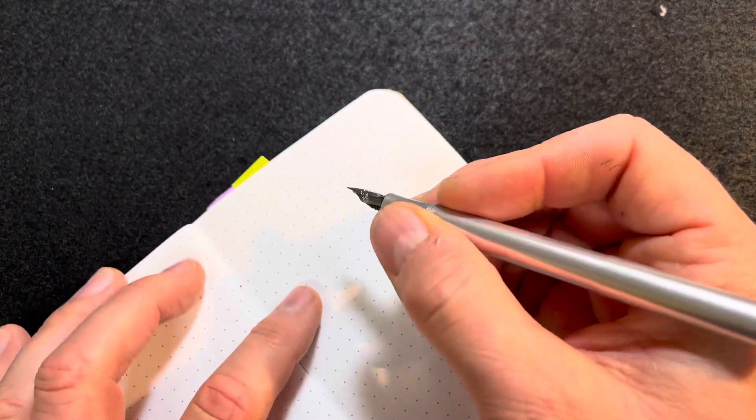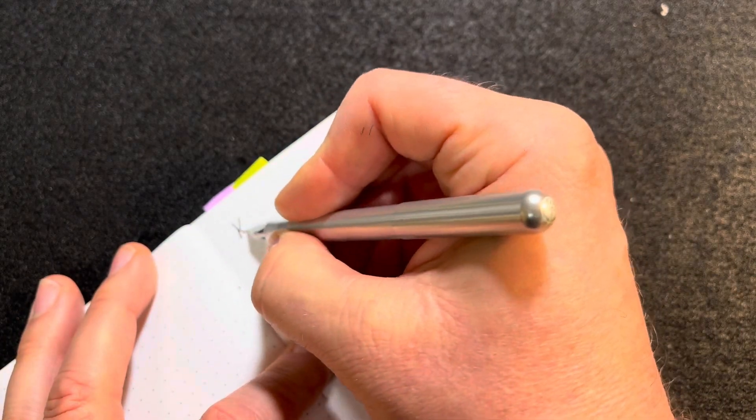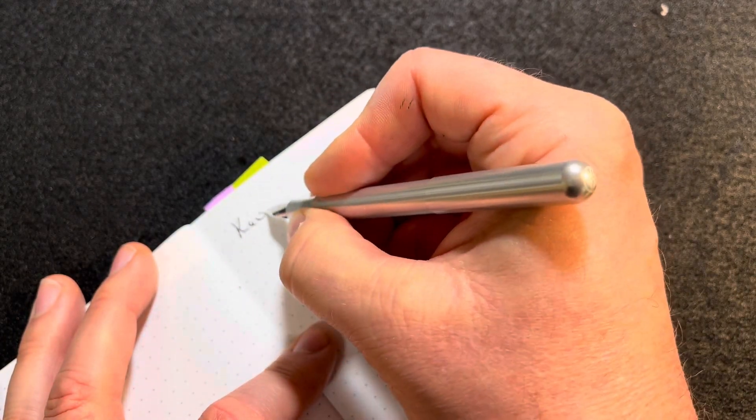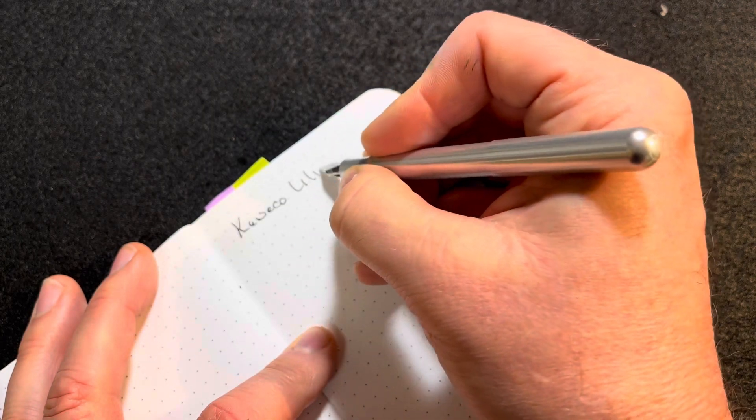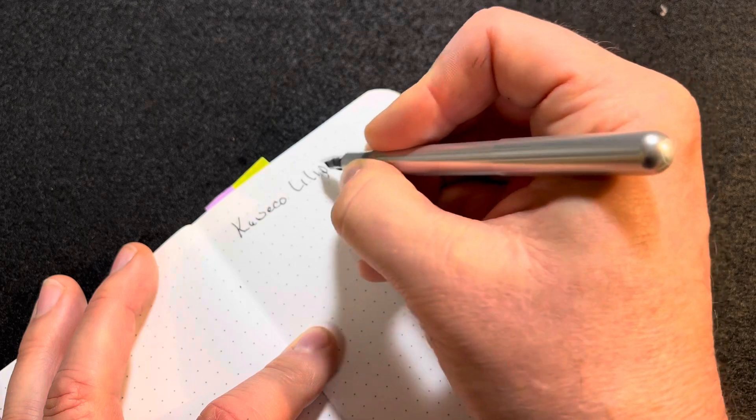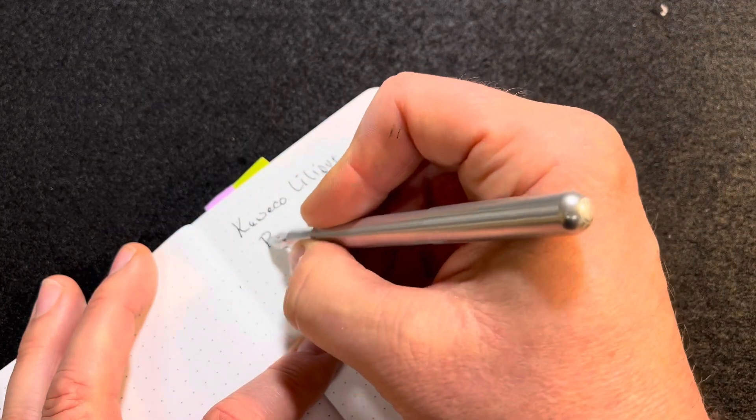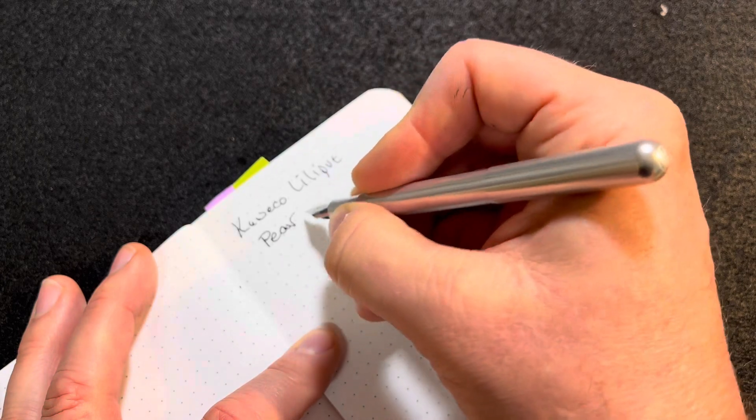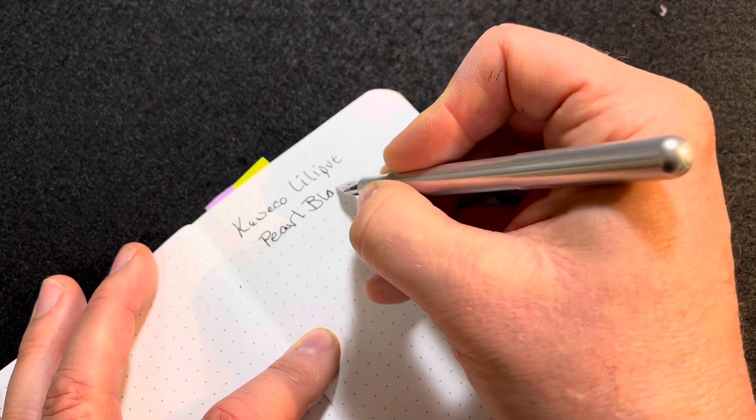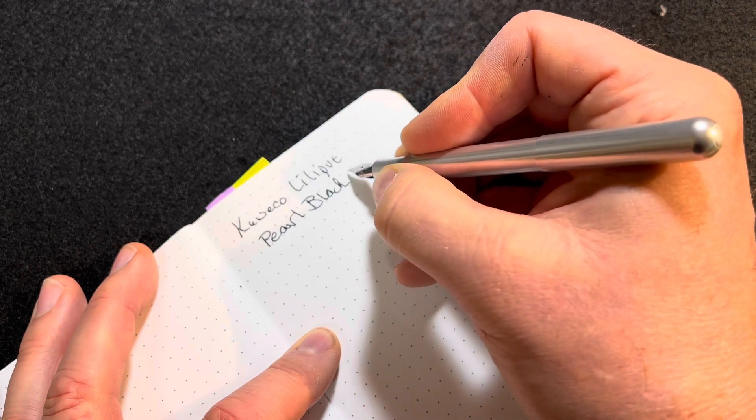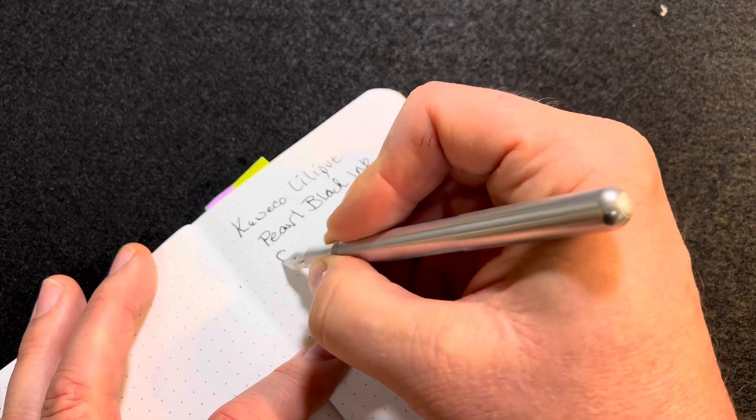Okay, that only took a few minutes to get the feed going and I've already got ink on me. So this is a Kaweco Liliput and this is pearl black and this is a fine nib.